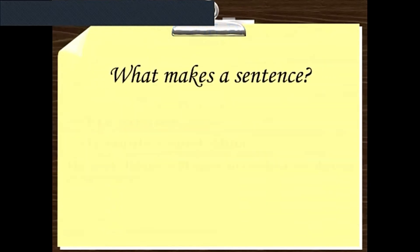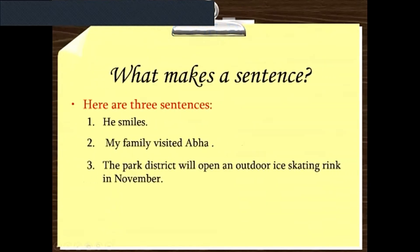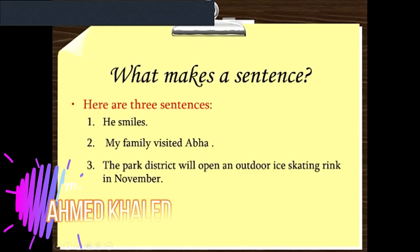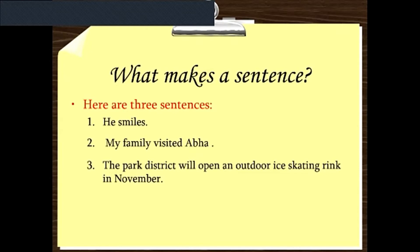What makes a sentence? As you can see, we have three sentences here. The first one: 'He smiled.' Second one: 'My family visited Abha.' Third one: 'The park district will open an outdoor ice skating rink in November.'